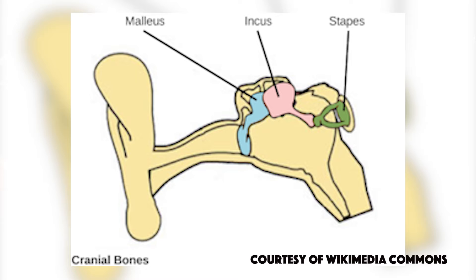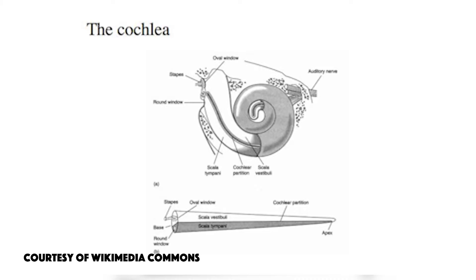And lastly the stapes. After the sound is amplified by all three bones, the sound vibrations are sent to the cochlea. The cochlea is a hollow, spiral-shaped bone that is found in the inner ear.